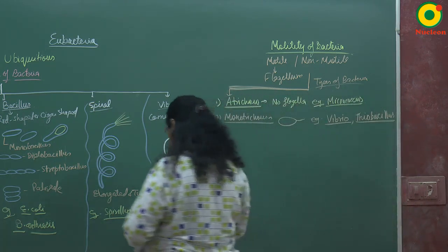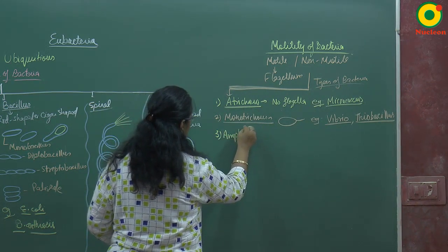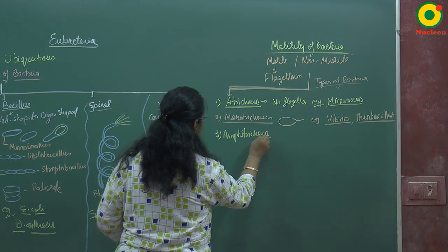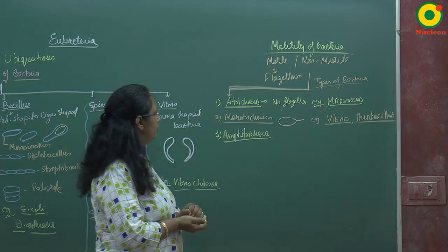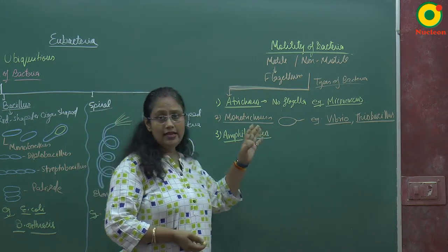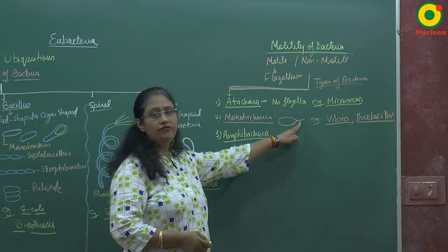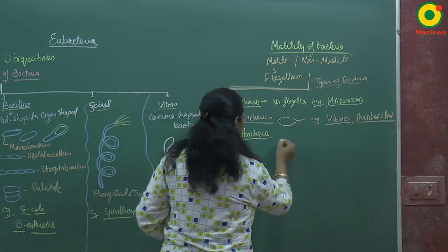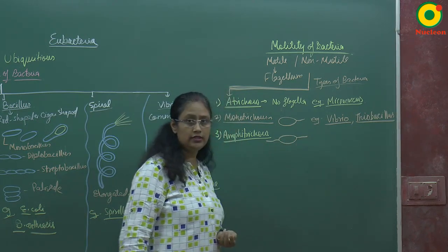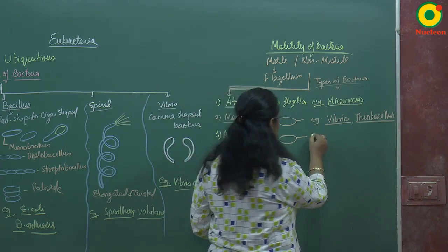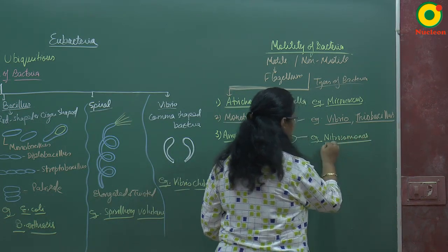The third type is amphitrichous bacteria. In amphitrichous bacteria, a single flagellum is present on both sides of the bacterial cell. Example: Nitrosomonas.